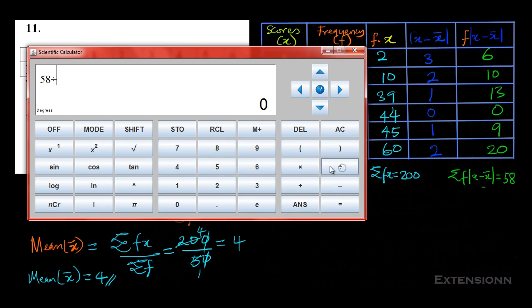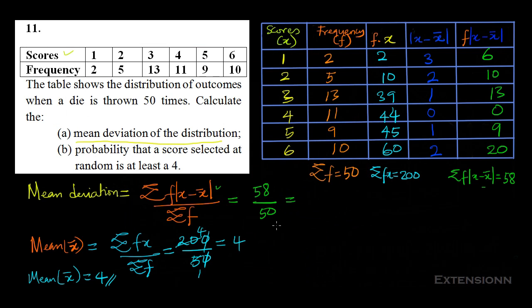So the mean deviation = 58 / 50 = 1.16. That is our mean deviation for the distribution.